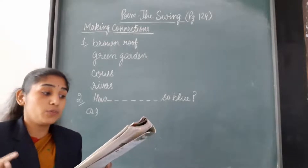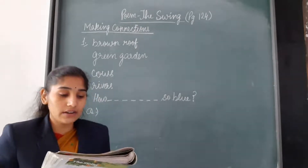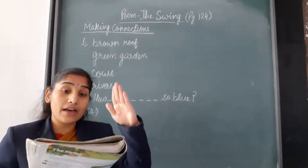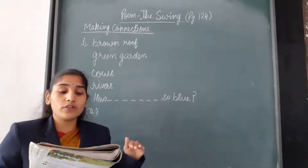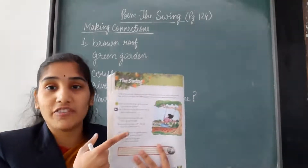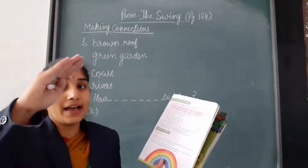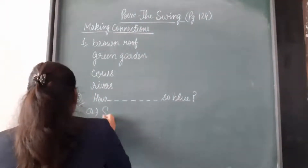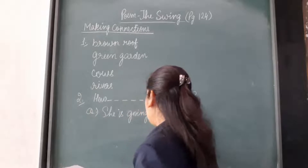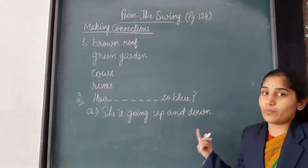The question is: how is the child moving in the air? We have three options and we have to pick the correct one. One option is: she is turning round and round. So children, how is the child moving? As we have read in the poem, the child is moving up and down. So we will write down that answer. This is the answer for part A.